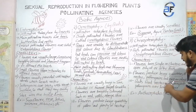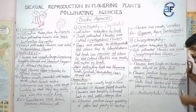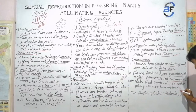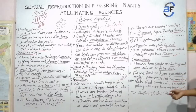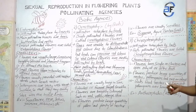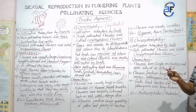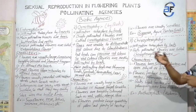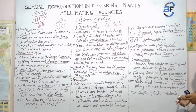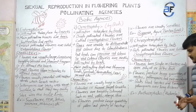Bats feed nectar and transport pollen grains over long distances — it may be up to 30 kilometers — that means they fly a long distance. By the time of feeding on nectar, the pollen grains are transferred from one flower to another flower by its mouth. Bats can transport pollen grains up to 30 kilometers — a long distance.